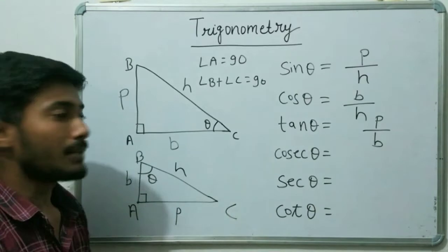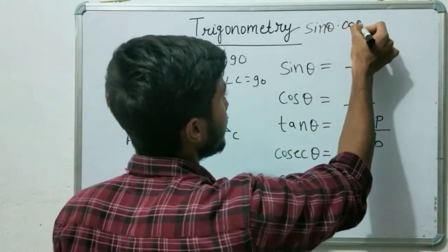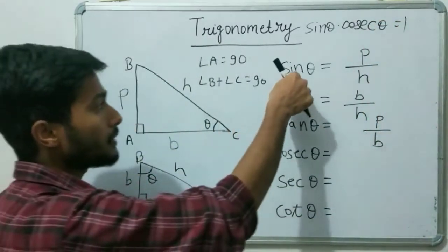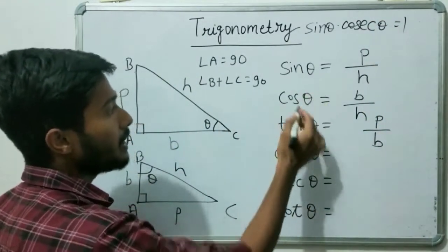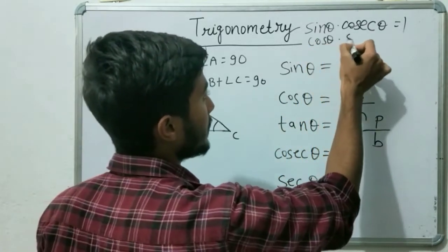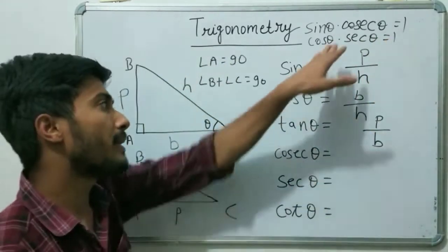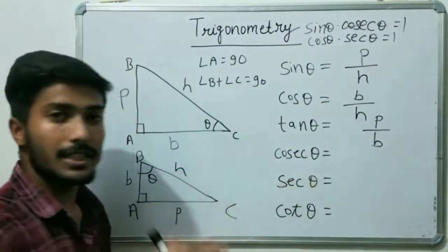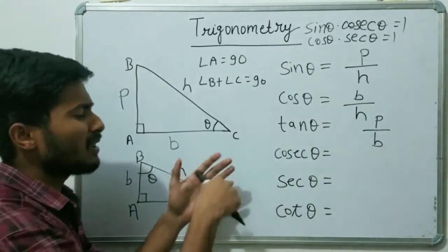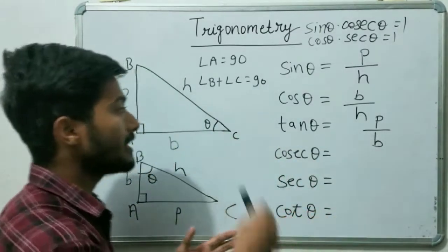What is the relation between these functions? Sin theta into cosec theta equals 1 — that is the relation between sin theta and cosec theta. Similarly, cos theta and sec theta have the relation: cos theta into sec theta equals 1. You just have to remember these. You will remember them easily if you practice, because practice is more important in trigonometry.